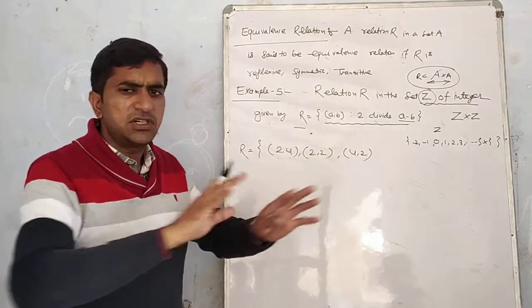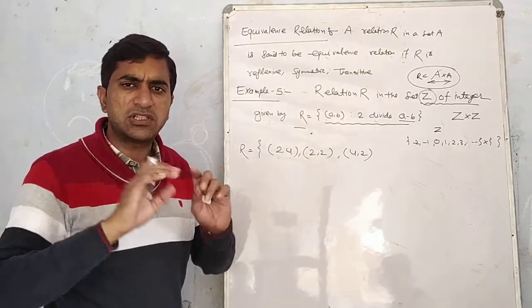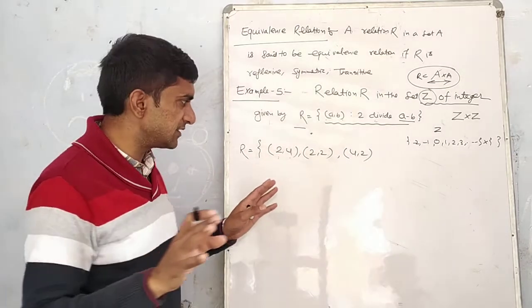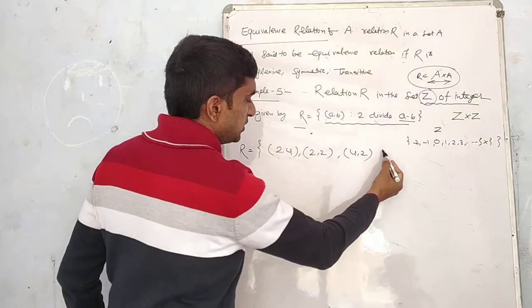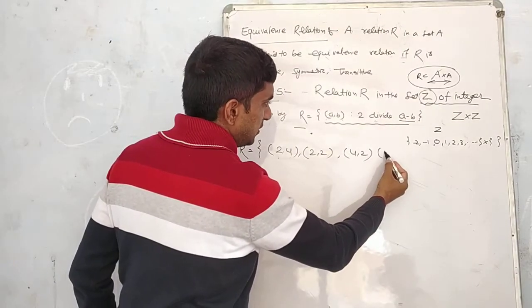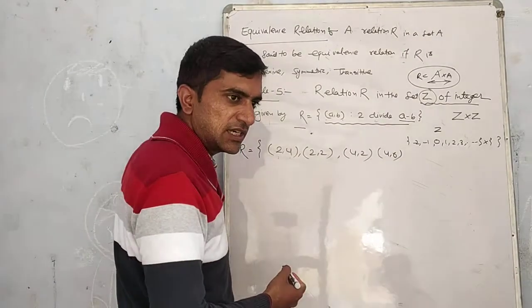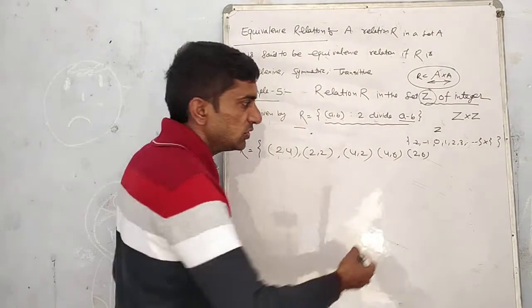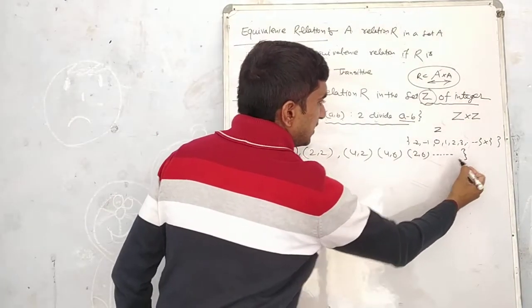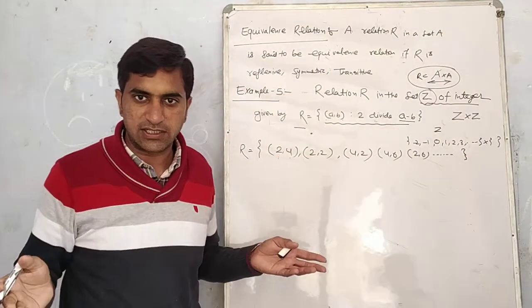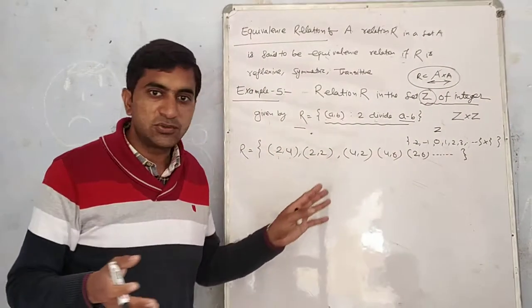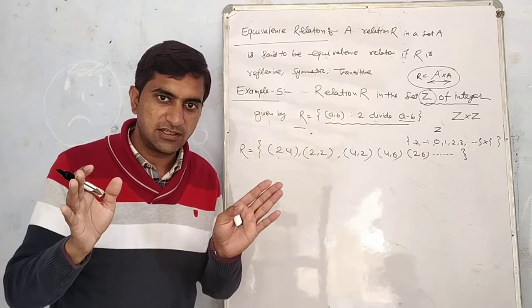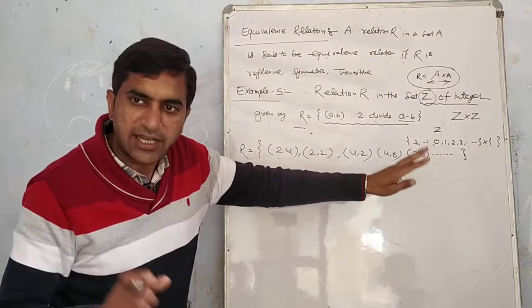I said unlimited elements are in this relation. Then I have (4, 6), (2, 6). I cannot write many elements. I have written a lot already but there are infinitely many. But this is the same way.